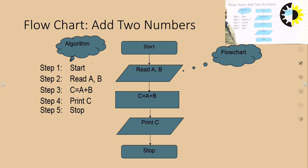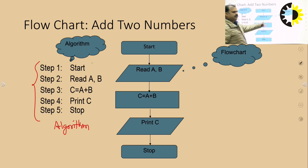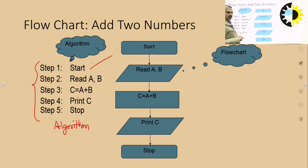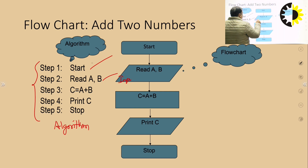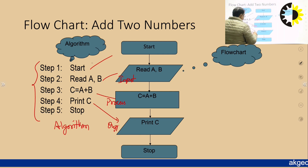Here is an example of a flowchart alongside a corresponding algorithm. We start with 'Start', then 'Read a, b' — which is an input operation written in a parallelogram. Then 'c = a + b', which is a process or computation written in a rectangle. Then 'Print c', which is output — also in a parallelogram. Finally, 'Stop'. Every step is connected with directed arrows.